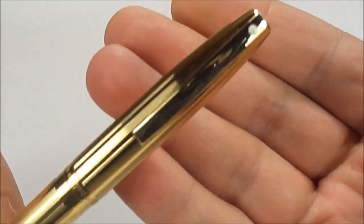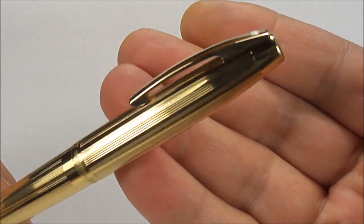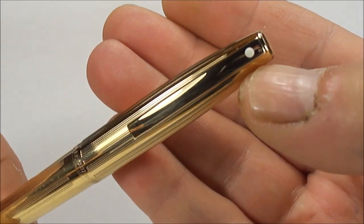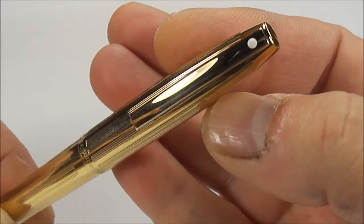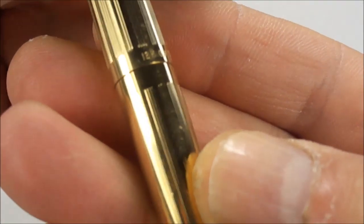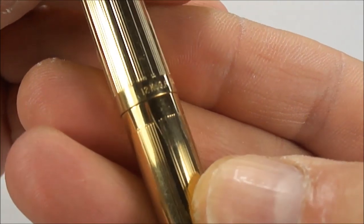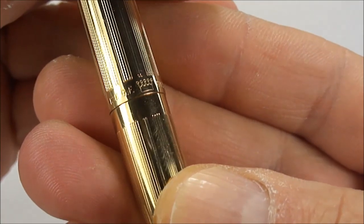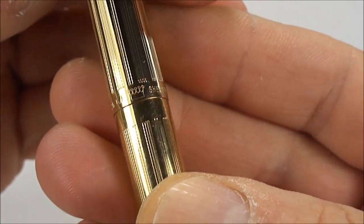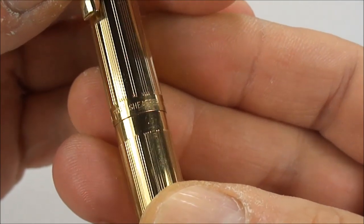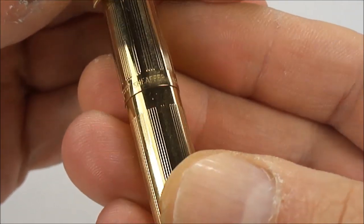You can see it's got the very recognizable Schaefer clip there to the end. Again to the top we've got the Schaefer white dot. If we show you the imprint to the bottom of the cap, you can see that it says Schaefer, and then if we turn it around, it's got the crown symbol in the middle, and a little bit further around we've got Schaefer USA.